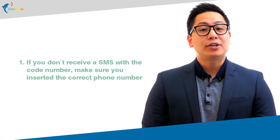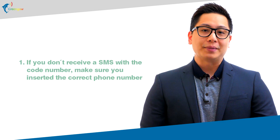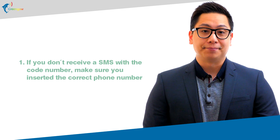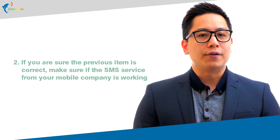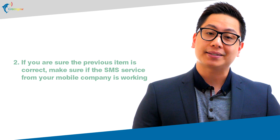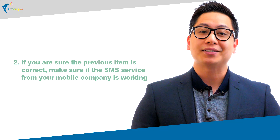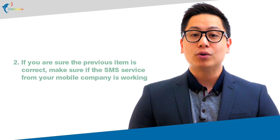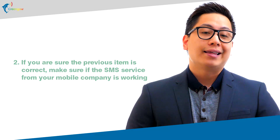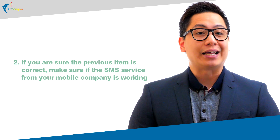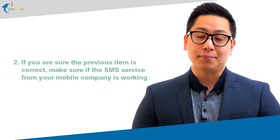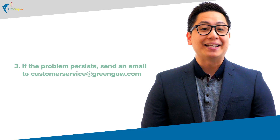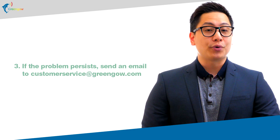Troubleshooting: One, if you don't receive an SMS with a code number, make sure you inserted the correct phone number — check the country code and area code. Two, if those are correct, make sure the SMS service from your mobile company is working; depending on your carrier and internet quality, the SMS could take longer than five minutes. Three, if the problem persists, send us an email to customerservice@greenggo.com.